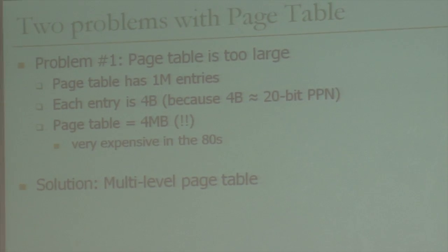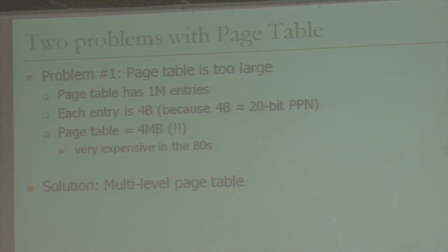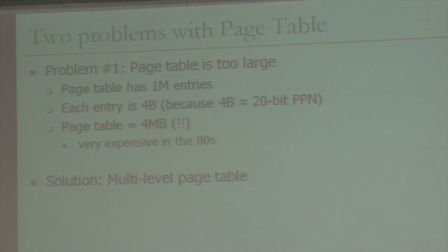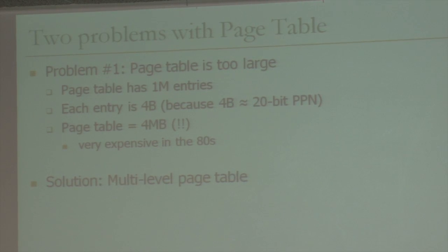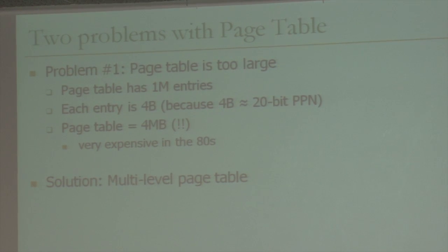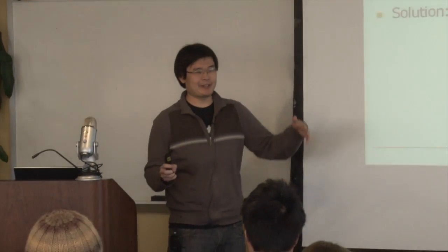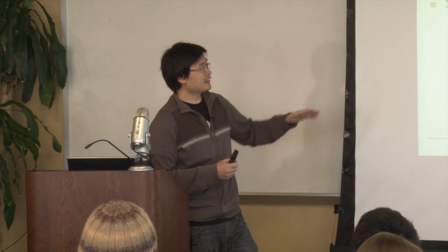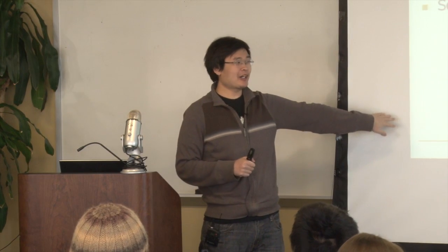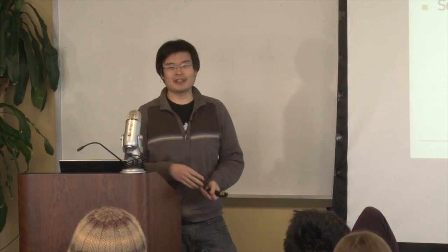Last week I covered topics about problems with page tables and how to do address translation. Problem number one was: what if the page table gets too large — say, one megabyte entries, each entry four bytes — then the size of the page table can become as big as four megabytes. That's pretty much the entire L2 cache in a lot of systems, and back in the 80s it was your entire physical memory. Anything beyond that you'd have to grab from disk, and the latency over that is really long compared to grabbing something from DRAM.